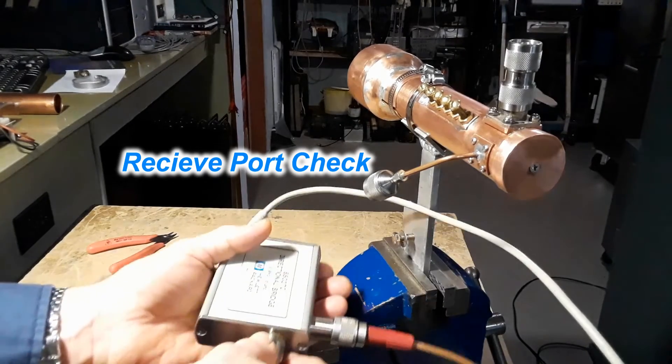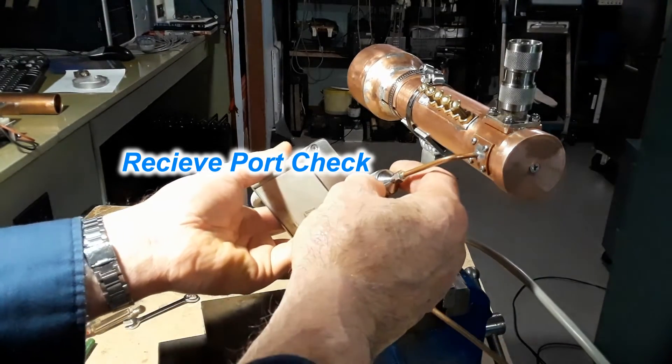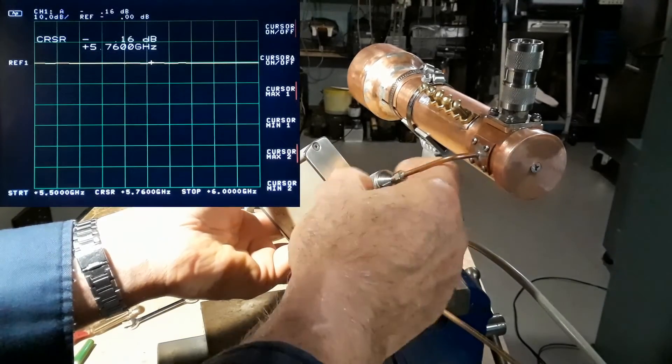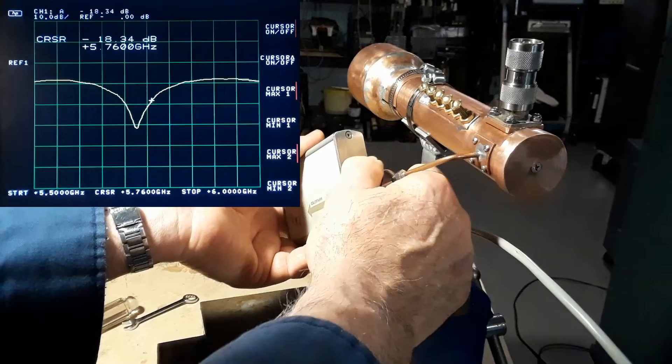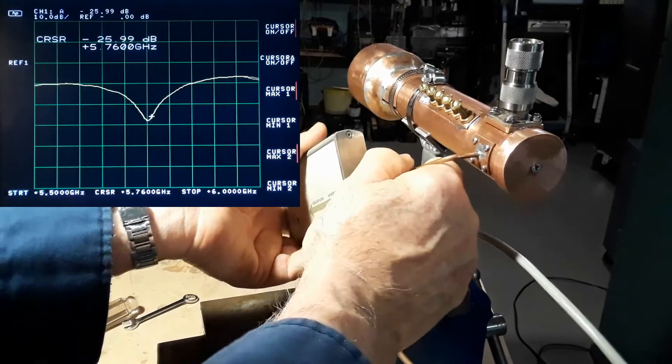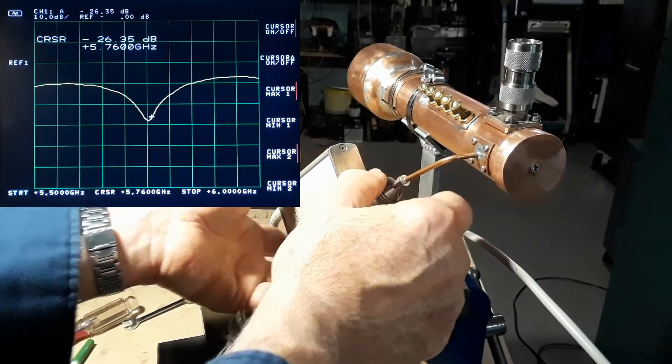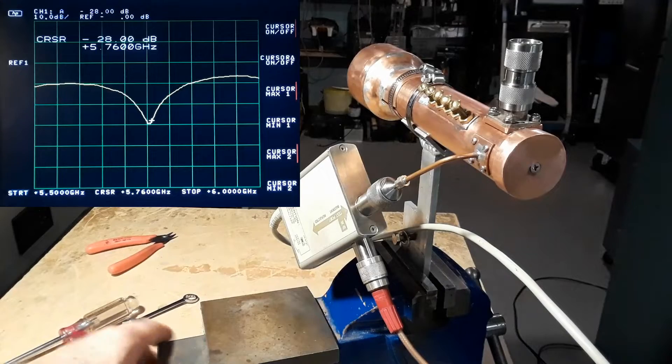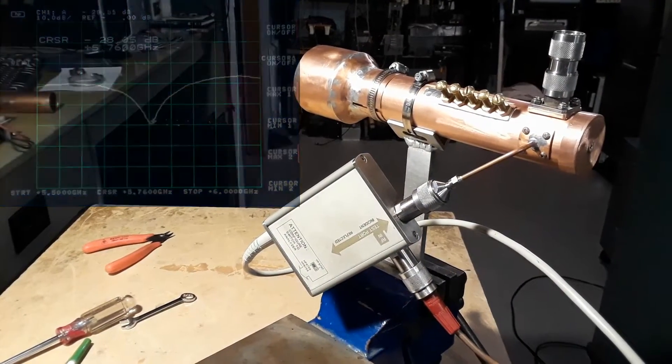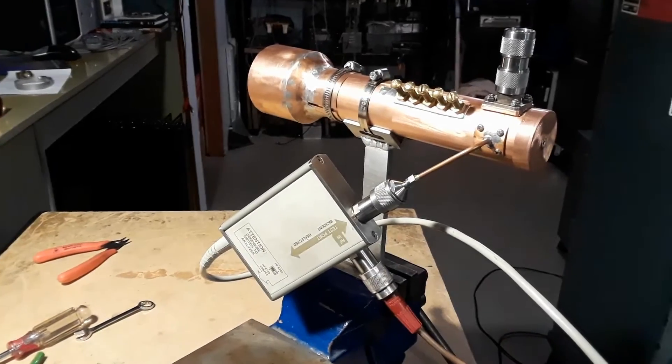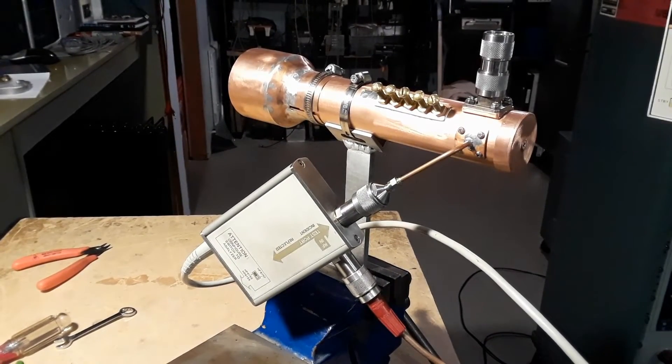That was the transmit port all nicely wrapped up so we'll take the return loss bridge and swap it over to the receive port and see how it turns out. Close enough for me especially when things are going to change after we do the circular polarization adjustment. So as it is right now it's all pretty good.